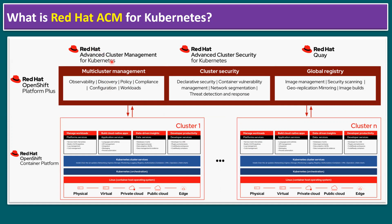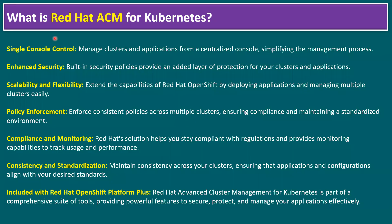ACM provides a single console control — manage clusters and applications from a centralized console, simplifying the management process. It also enhances security through built-in security policies that provide an added layer of protection for your clusters and applications. Scalability and flexibility means you can start with two clusters and later add multiple clusters — extending the capabilities of Red Hat OpenShift by deploying applications and managing multiple clusters easily, whether bare metal, vSphere, or public cloud. Policy enforcement allows you to enforce consistent policies across multiple clusters, ensuring compliance and maintaining a standardized environment.